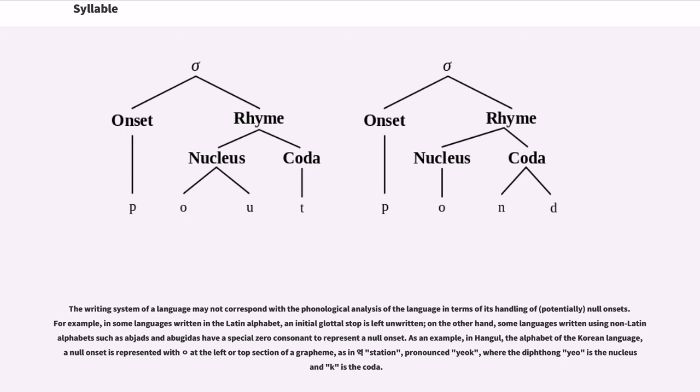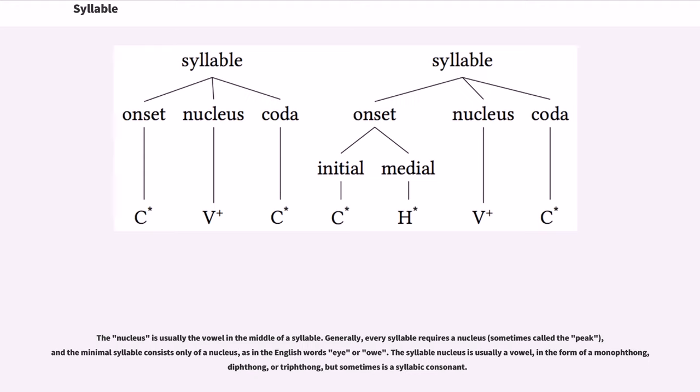The writing system of a language may not correspond with the phonological analysis of the language in terms of its handling of null onsets. For example, in some languages written in the Latin alphabet, an initial glottal stop is left unwritten. On the other hand, some languages written using non-Latin alphabets such as abjads and abugidas have a special zero consonant to represent a null onset. As an example, in Hangul, the alphabet of the Korean language, a null onset is represented with a circle at the left or top section of a grapheme, as in station, pronounced yok, where the diphthong yo is the nucleus and k is the coda.